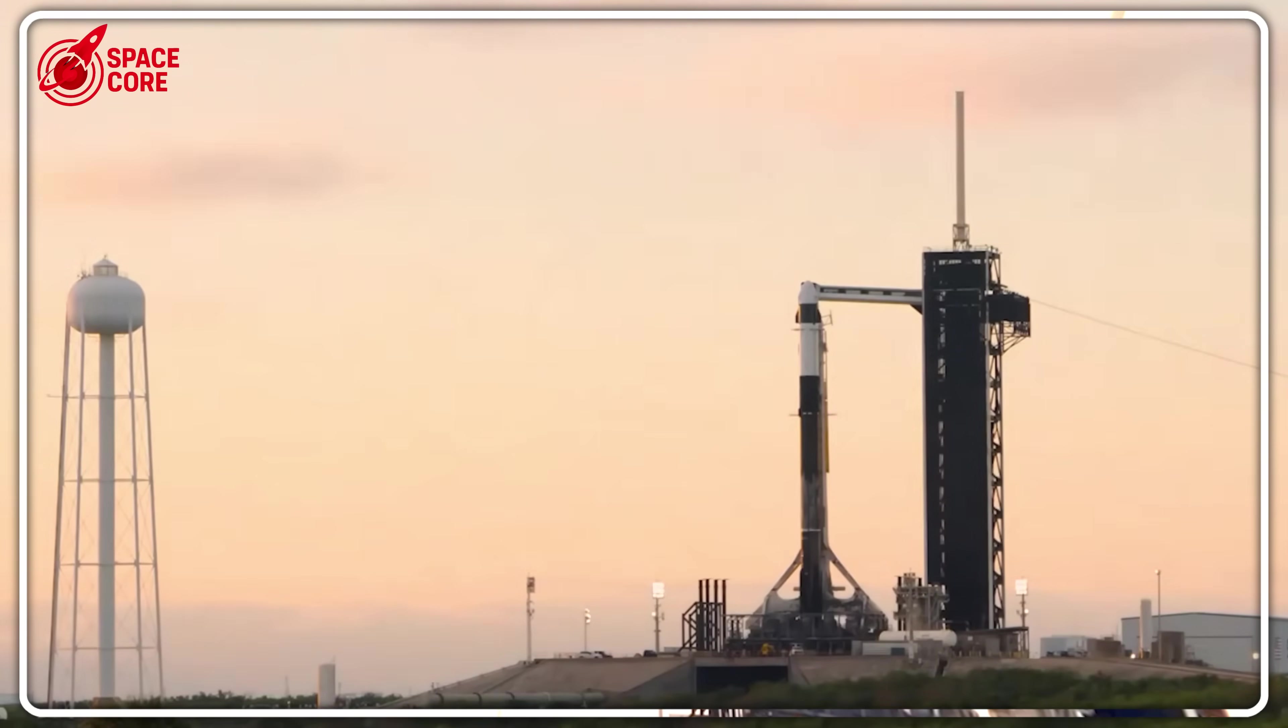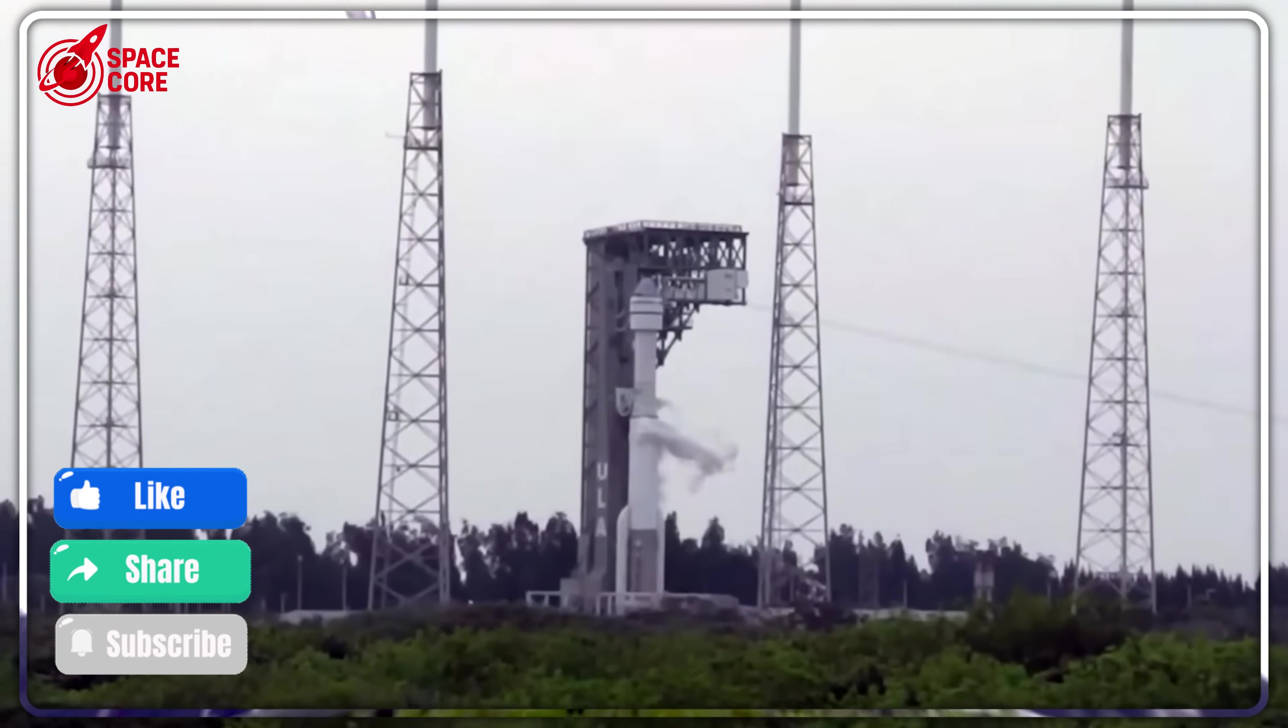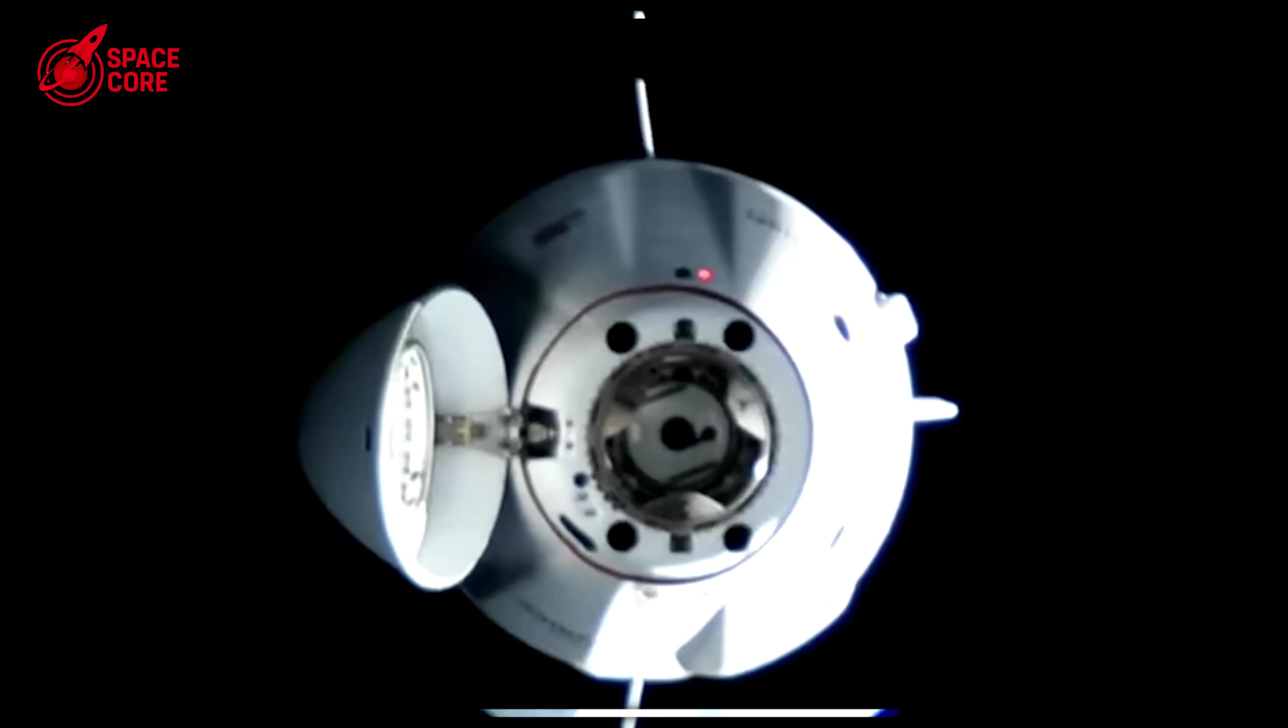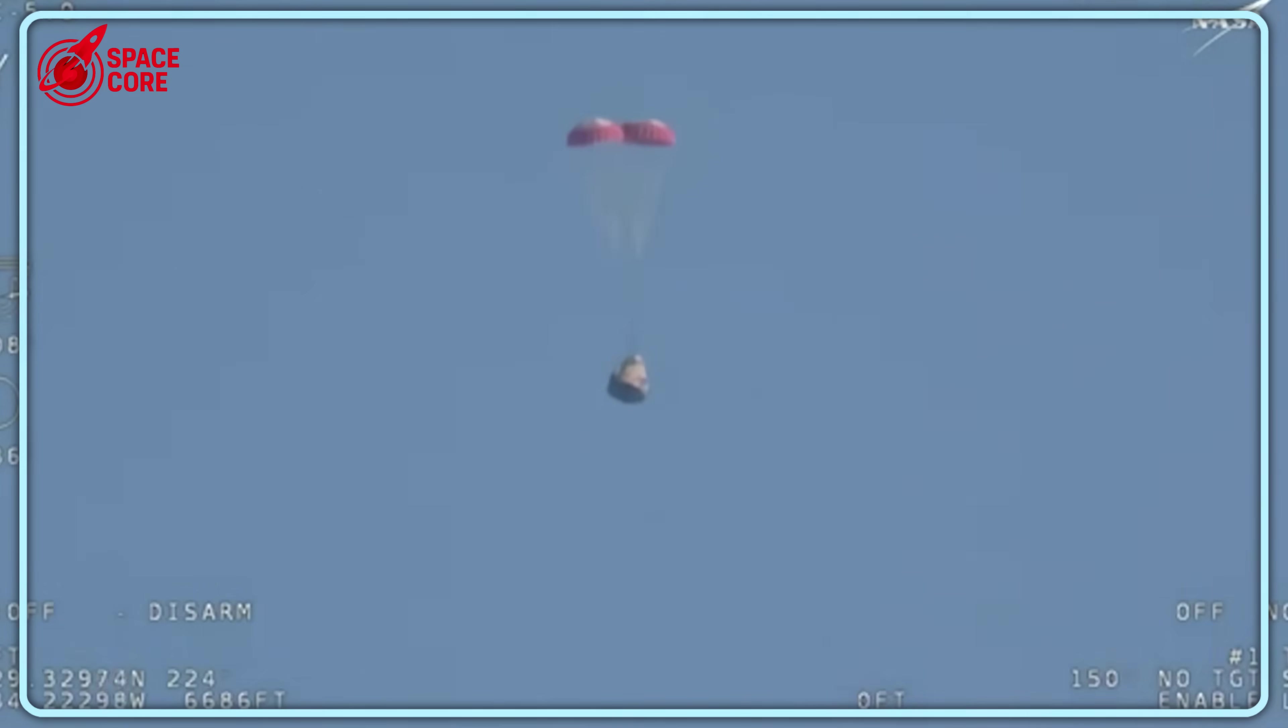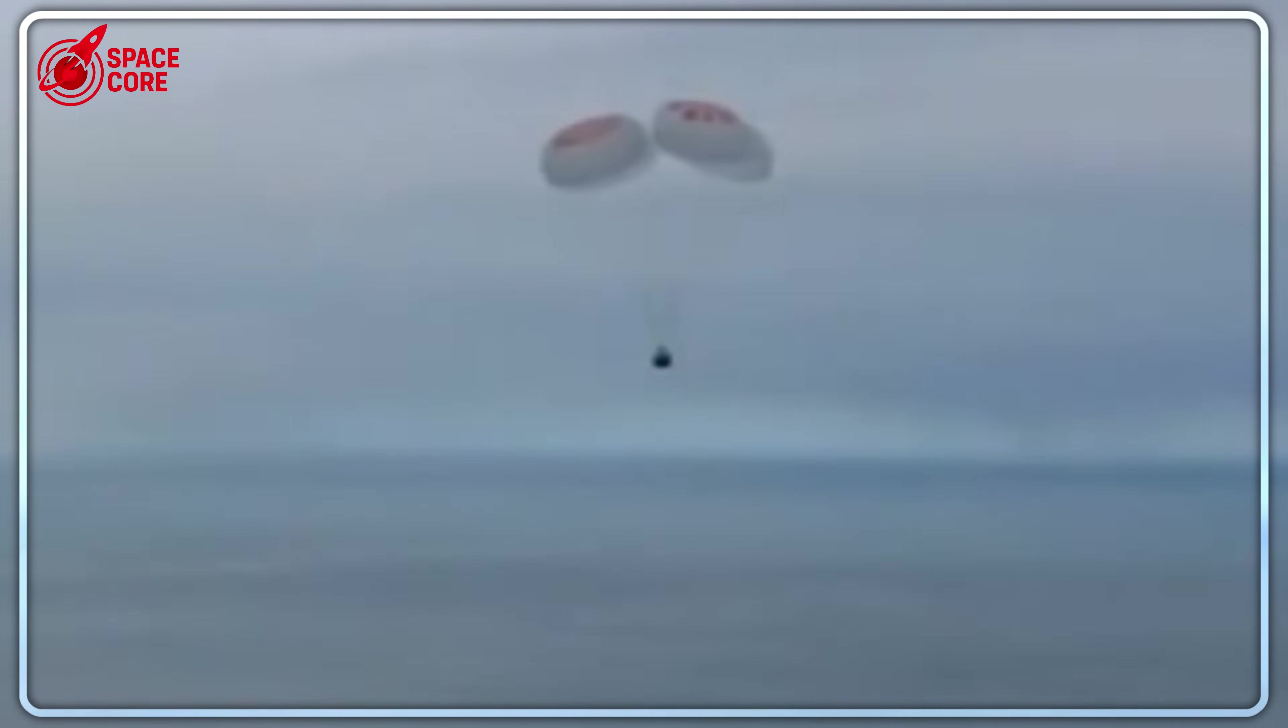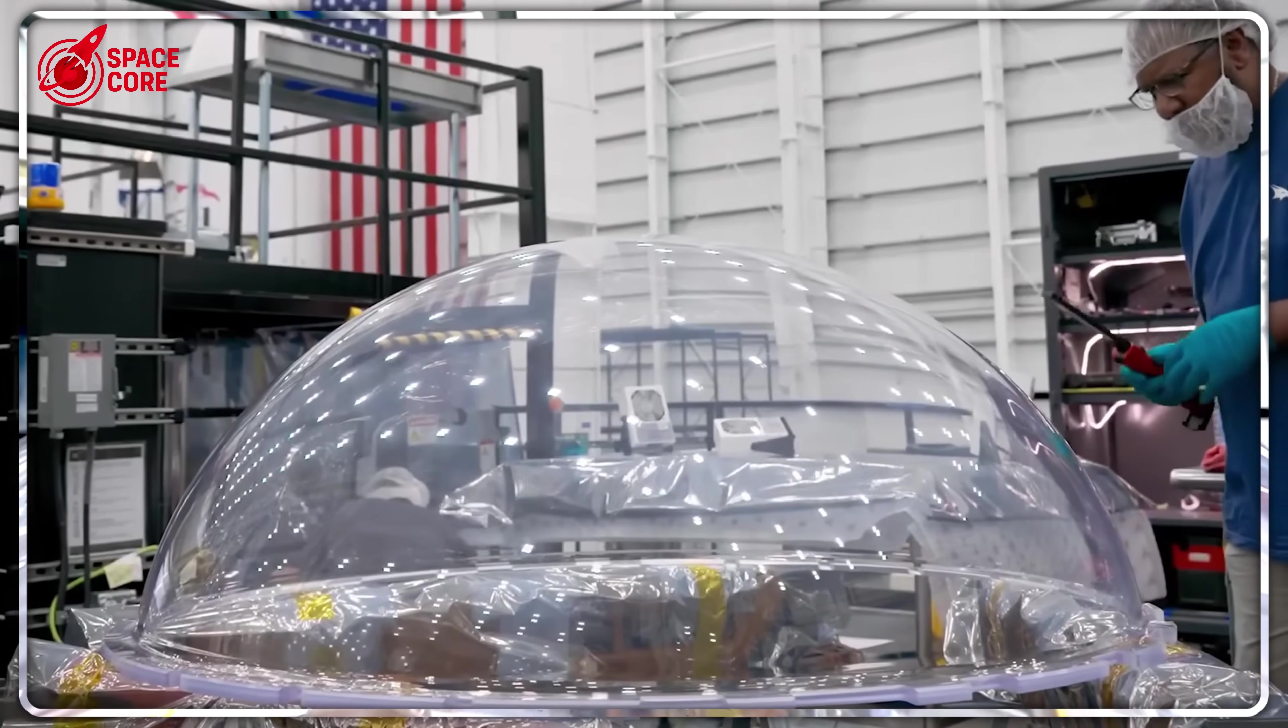But here's what's really crazy. SpaceX has spent over 15 years and billions of dollars perfecting Dragon. They've mastered capsule design, heat shields, life support systems and ocean recovery. Dragon has flown 47 successful missions without a single crew fatality. Are they really going to throw all that expertise away for an unproven Starship system? Or is there something bigger happening here? A master plan that uses Dragon's proven reliability as a stepping stone to something even more ambitious? Here's the timeline that makes everything click.